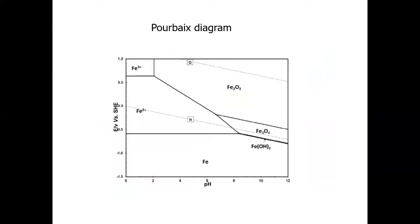I'm now going to move on to something called a Pourbaix diagram. I don't know whether you've done this in your class, but it's a type of phase diagram. A Pourbaix diagram is named after a French electrochemist and material scientist called Paul Pourbaix, who created this diagram. It shows voltage — specifically reference electrode potential on the vertical y-axis — and pH on the horizontal x-axis.